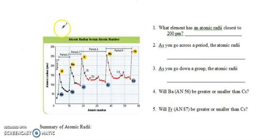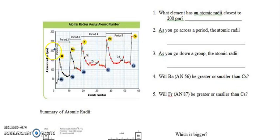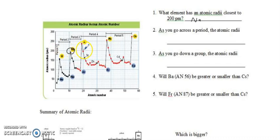So let's try and apply what we've learned from that. What element has an atomic radii closest to 200 picometers? Let's zoom in. Here's 200. Going all the way across, what element is closest to 200 picometers? It looks like sodium is going to be the closest to our 200 picometer line. But if we keep looking, it could be atomic number 20 — which is calcium. So I'm going to say either sodium or calcium is kind of a toss-up. It's hard to see with the chart being so small.